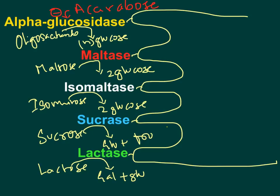So the brush border enzymes — alpha glucosidase, maltase, isomaltase, sucrase, and lactase — are all attached to the brush border epithelium. They each act on their specific sugar molecules and break them into the simplest form, monosaccharides. Ultimately, starch, lactose, and sucrose are all converted into glucose, fructose, and galactose, which are present in the intestinal lumen.